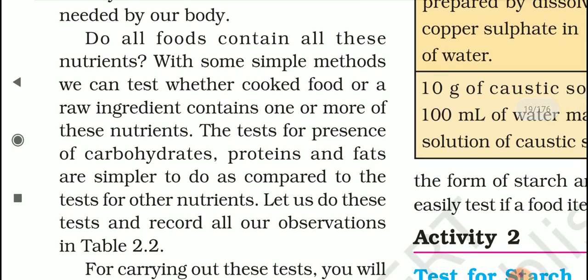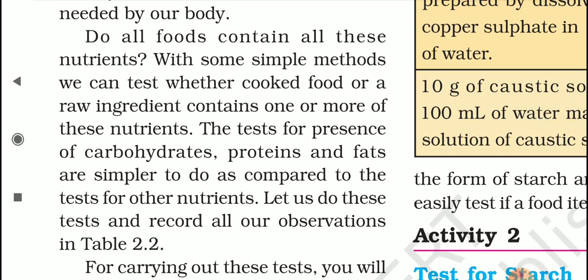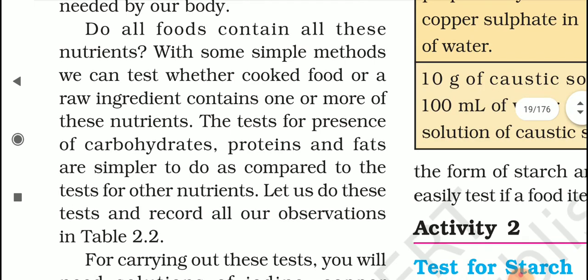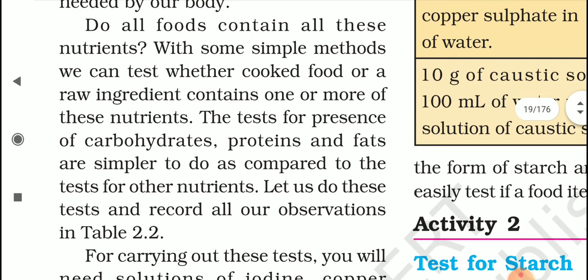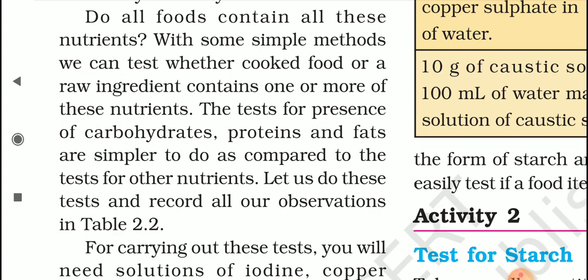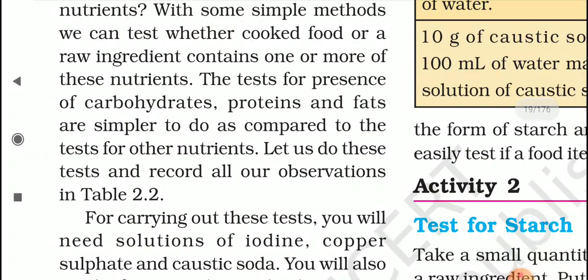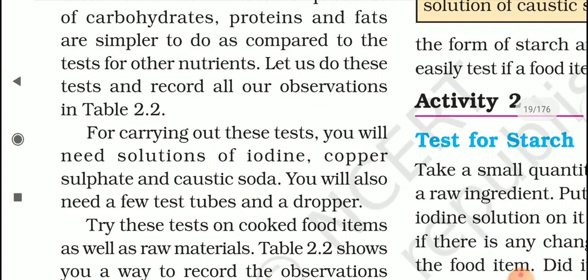Do all foods contain all these nutrients? No. With some simple methods, we can test whether cooked food or raw ingredients contain one or more of these nutrients — for example, testing whether rice, milk, bread, or pulses contain carbohydrates or proteins. There are some tests, and the tests for carbohydrates, proteins, and fats are simpler to do. Let us do these tests and record all our observations in table 2.2.